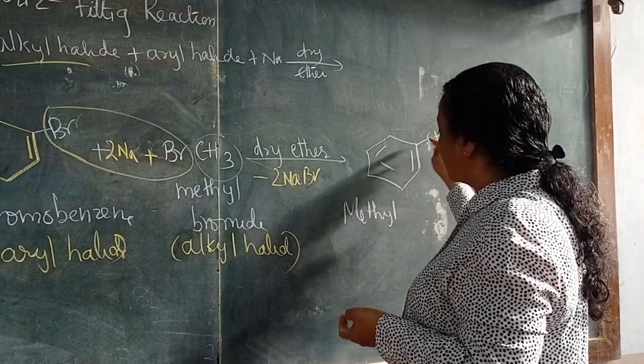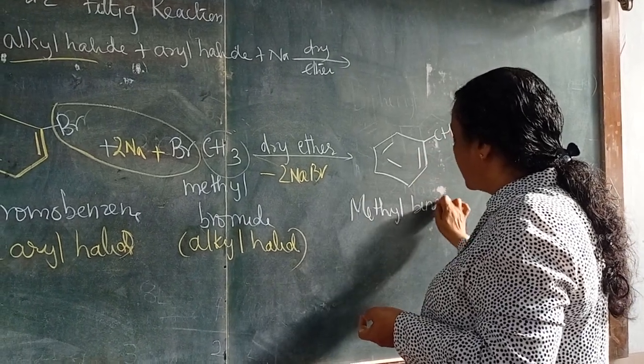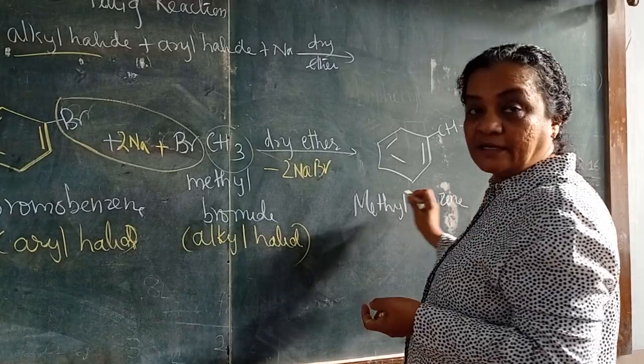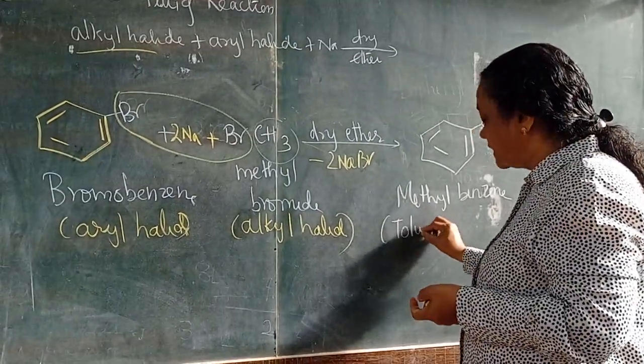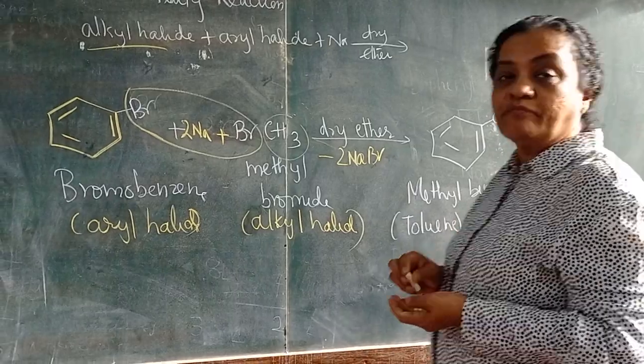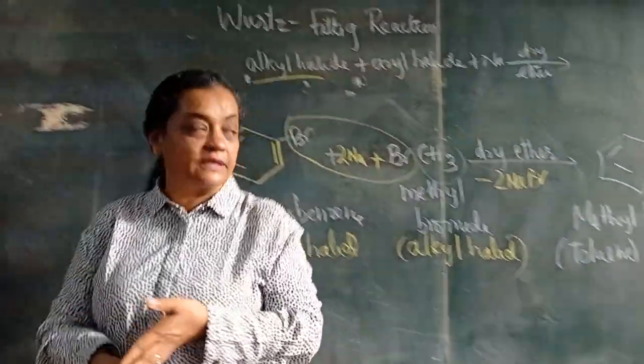Kya hai? Methyl group hai benzene pe - methyl benzene. And this is more popularly known as toluene. Toluene kya hota hai? Methyl benzene.